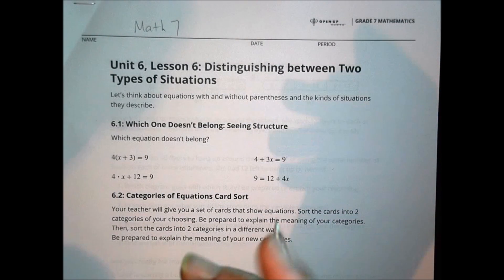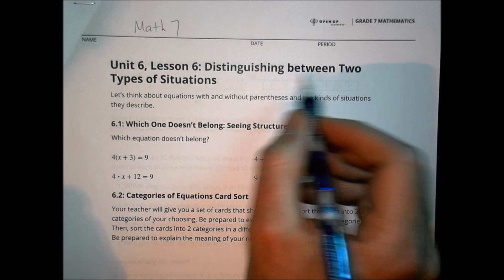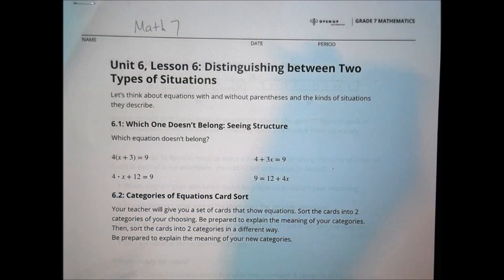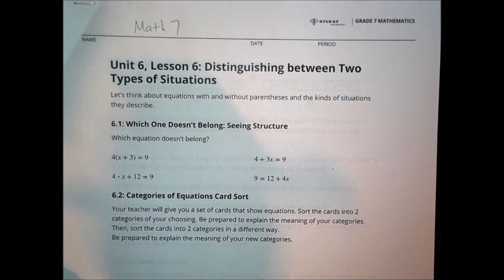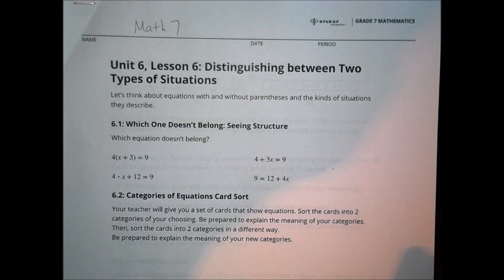Hey, this is Math 7, Unit 6, Lesson 6, called Distinguishing Between Two Types of Situations. Today's lesson is going to be a little short because there are some activities you're going to do in your class today that I can't really replicate here in the video.